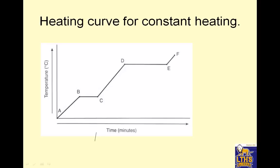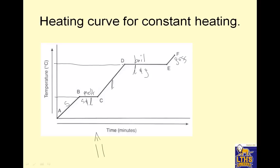Heating curve for constant heating — meaning it's under a flame that just keeps going. This is a solid, this is melting, this is a liquid, this is boiling, this is a gas. What's interesting is at melting, both solid and liquid states of matter exist at the same time. You cannot change your temperature until you've completely changed your state of matter. At a phase change you're a mixture of states of matter; once you're a pure state of matter, you're not at a phase change anymore.